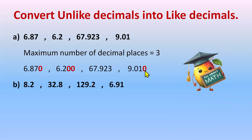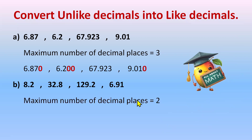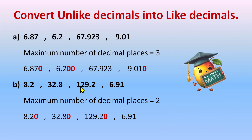Moving to the next example: here we have one decimal place, one decimal place, one decimal place, and two decimal places. So the maximum number of decimal places is two. You only focus on the digits after the decimal. Add one zero to each of the first three numbers to make two decimal places. So we get 8.20, 32.80, 129.20, and 6.9 — now all decimal places are the same.